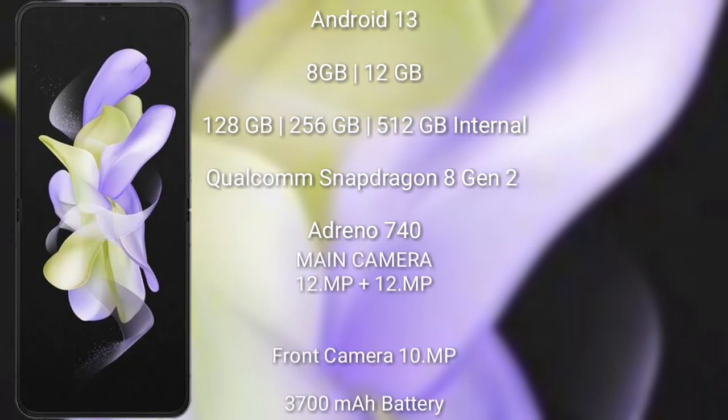The Samsung Galaxy Z Flip 5 runs on Android 13. It comes with 8GB or 12GB RAM and 256GB or 512GB internal storage, powered by a Qualcomm Snapdragon 8 Gen 2 processor. It features a dual rear camera setup of 12 megapixel plus 12 megapixel, a 10 megapixel front camera, a 3700 mAh battery, and 25W fast charging support.